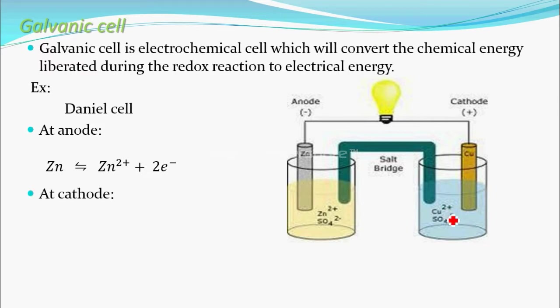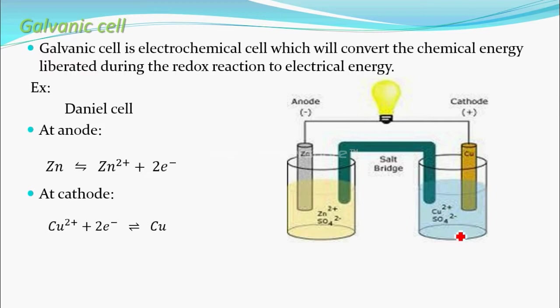In the zinc sulfate solution, the salt is already dissociated into Zn²⁺ and SO₄²⁻ ions. Similarly, the copper sulfate solution contains Cu²⁺ and SO₄²⁻ ions.